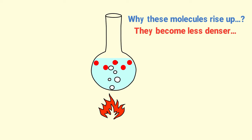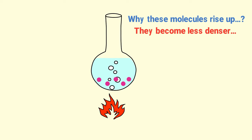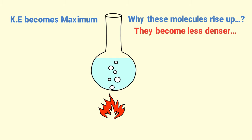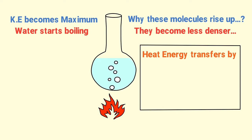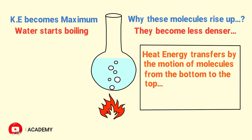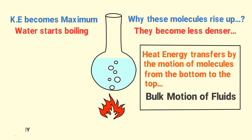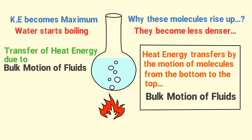The denser molecules at the top then fall down to the bottom, absorb heat energy, and also rise up. This process continues — less dense molecules rise, more dense molecules fall — until all the water molecules have absorbed heat energy. Eventually the kinetic energy of the molecules reaches a maximum, a change of state begins, and the water starts boiling. Heat energy transfers through the water by the motion of molecules from the bottom to the top, called the bulk motion of fluids. The transfer of heat energy due to bulk motion of fluids from one place to another is called convection of heat.